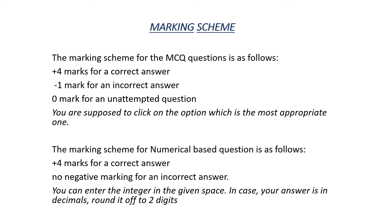0 mark for an unattempted question. You are supposed to click on the option which is the most appropriate one. The marking scheme for numerical based questions is as follows: plus 4 marks for a correct answer and no negative marking for an incorrect answer.